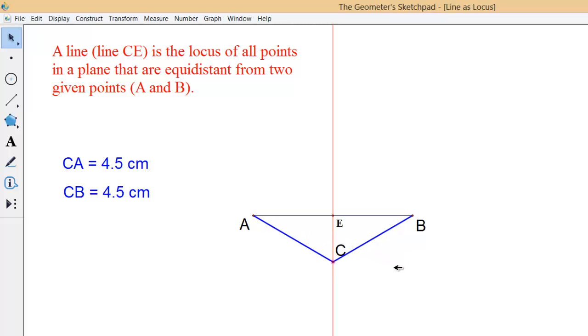So point C is a point anywhere on line CE which is the red line, and point C is always the same distance from point A as it is from point B.